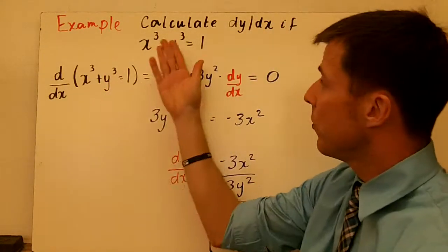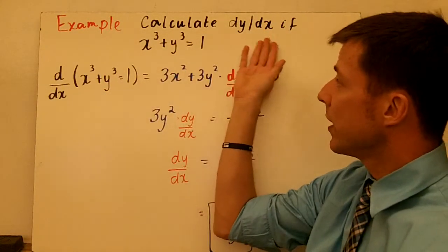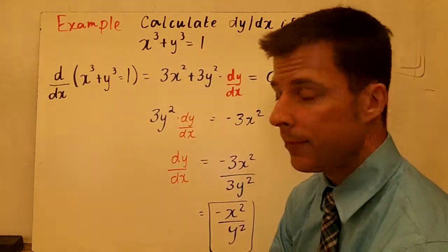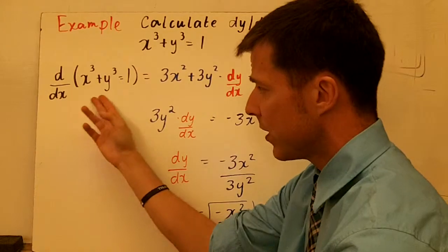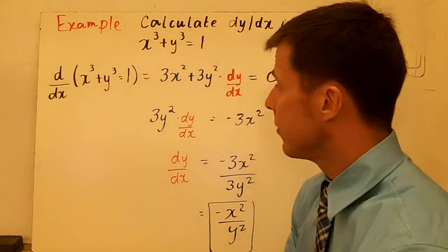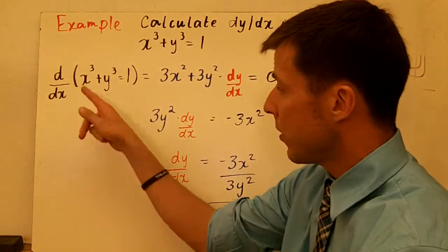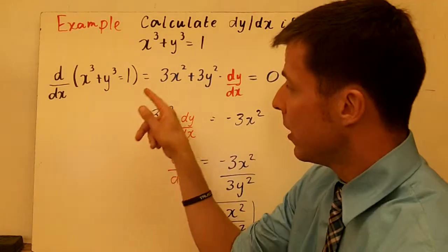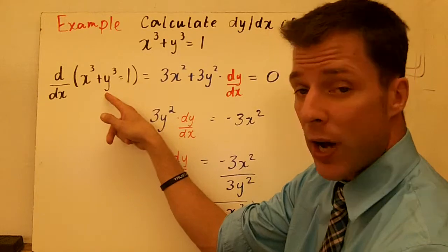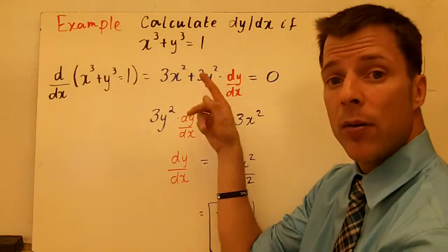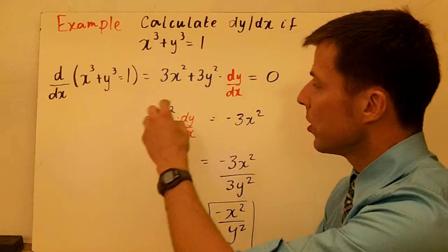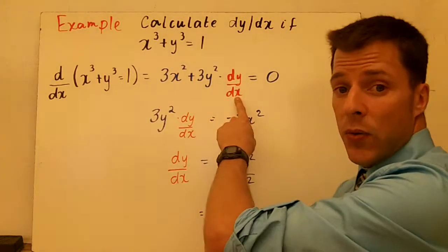In the second example, we've changed it. We're going to calculate the derivative if x cubed plus y cubed equals 1. I'm taking the derivative of this equation — two different variables. I take the derivative of each piece: the derivative of x cubed is 3x squared. The derivative of y cubed is 3y squared, but notice again I took the derivative with a y term, so I multiply it by dy/dx.